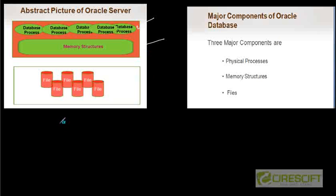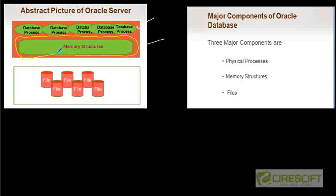In our last couple of videos we have already discussed about how the file system looks like and what are the different types of files. In the next couple of videos we are going to focus mostly on the memory structure — what different things this memory structure contains, how to manage this memory, and how to tune it so that we can make our database run faster and perform better. So this is the goal of the next couple of videos.